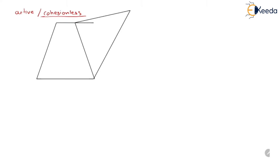Coulomb initially developed this theory for cohesionless soil, but now it can also be used for cohesive soil. Here, in the figure, we can see a retaining wall and the soil retained by it has an inclined surface at an angle I. In the active case, the wall moves away from the backfill, and as a result, the sliding wedge ADB also moves downward and towards the retaining wall.